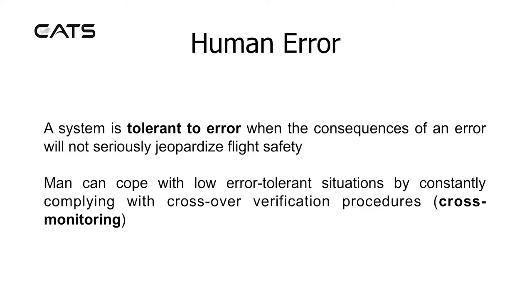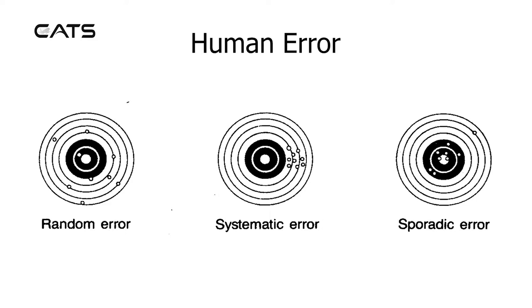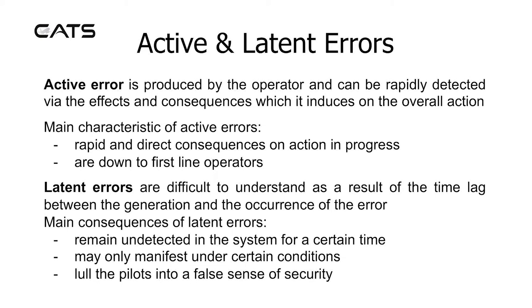Man can cope with low error tolerance situations by constantly complying with crossover verification procedures and cross monitoring. Human error may involve random error, systematic error, or sporadic error.